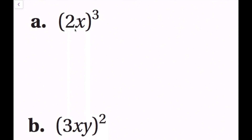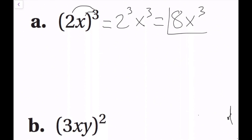For part a of the power of a product examples, we have the quantity 2x to the third power. We distribute the exponent to each factor — like the distributive property — so this becomes two to the third power times x to the third power. Since two to the third is 8, the final simplified answer is 8x to the third power.